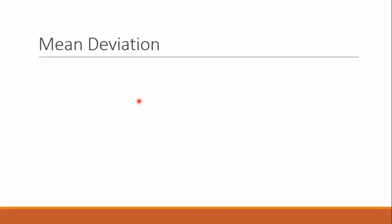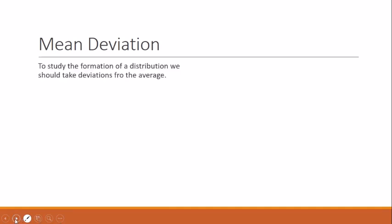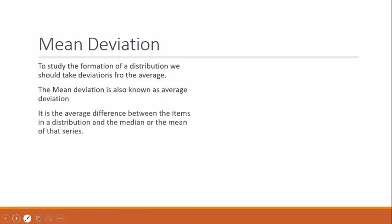Mean deviation — also known as average deviation — does achieve this goal and is very useful. It is the average difference between the items in a distribution and the median or mean of that particular series.